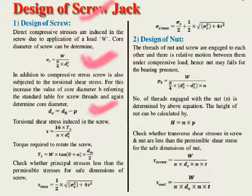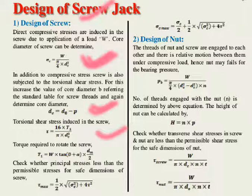For calculating the torsional shear stress, the formula is: τ = 16T1 / (π × dc³). Since dc is already calculated, we need T1 first. T1 is the torque required to rotate the screw under load, given by: T1 = W × tan(φ + α) × dm/2, which is the torque formula for raising the load — as discussed in the previous section.